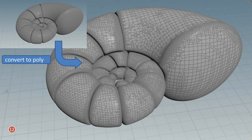Now, the volumes of the chambers are converted to polygon mesh. The chamber shapes are now basically finished.